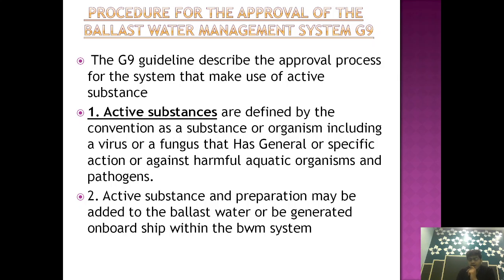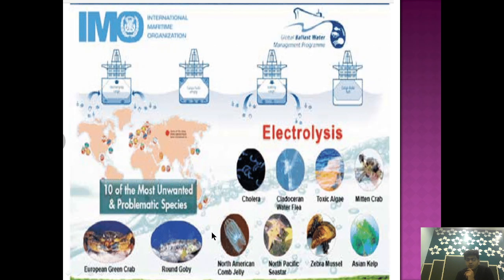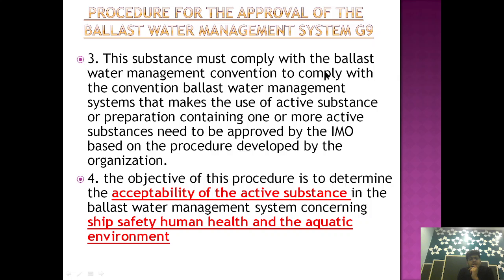Now we know what an active substance is, but how is it made? An active substance can be prepared by adding it to the ballast water or by being generated on board ship. The effect should be specific to the target invasive organism, and it must comply with the D2 standard. Any ballast water management system that makes use of active substances or preparations containing one or more active substances needs to be approved by IMO based on the procedure developed by the organization.